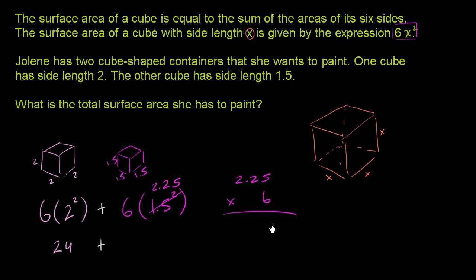We're going to have 6 times 5 is 30. 6 times 2 is 12. Plus 3 is 15. 6 times 2 is 12. Plus 1 is 13. I have two numbers behind the decimal. 13.5. So it's going to be 13.5.